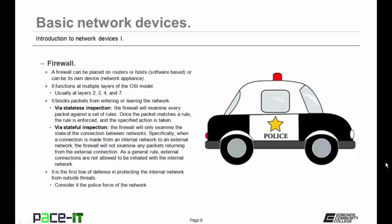It can use stateless inspection, where the firewall will examine every packet against a set of rules. Once the packet matches a rule, the rule is enforced and the specified action is taken. The other method is stateful inspection, where the firewall will only examine the state of the connection between networks. Specifically, when a connection is made from an internal network to an external network, the firewall will not examine any packets that are returning from the external connection. As a general rule, external connections are not allowed to be initiated with the internal network.